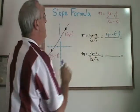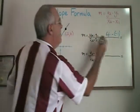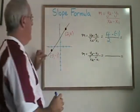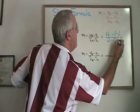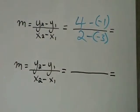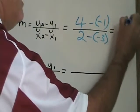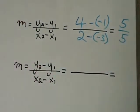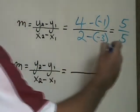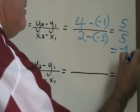Then x2, which is the 2, minus x1, which is the negative 3. 4 minus negative 1 is equal to 5, and 2 minus negative 3 is equal to 5. So I end up with a slope of 5 over 5, which simplifies to be equal to 1.